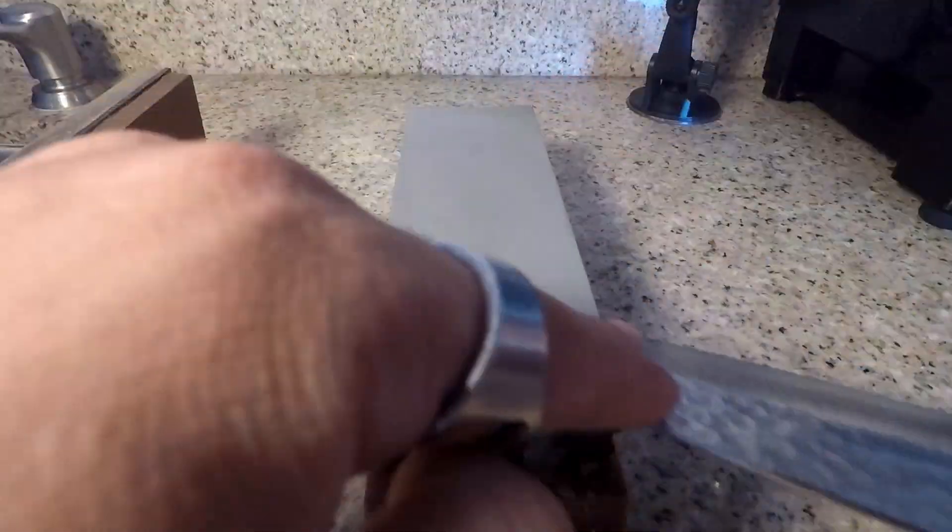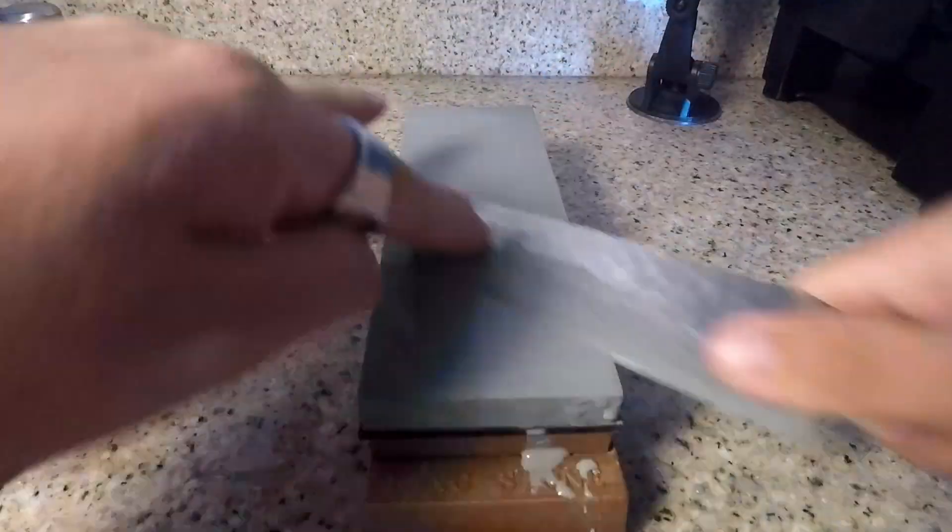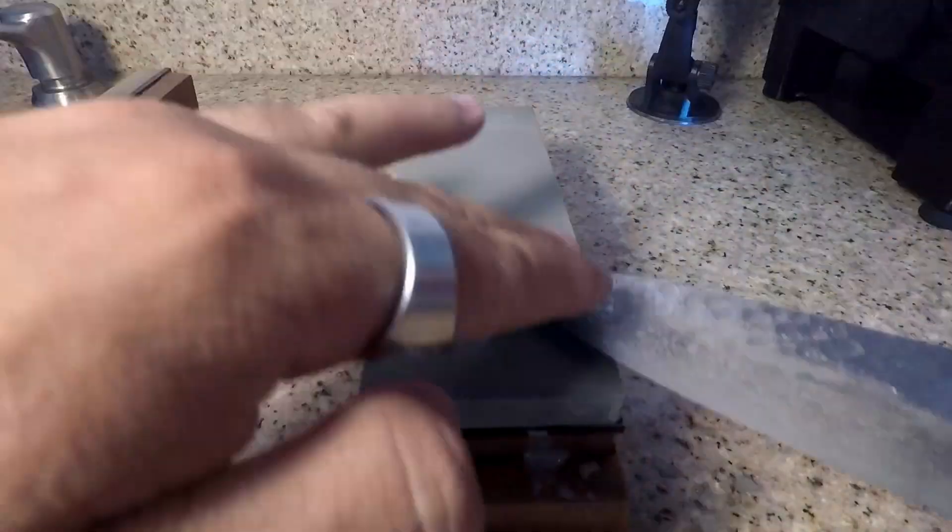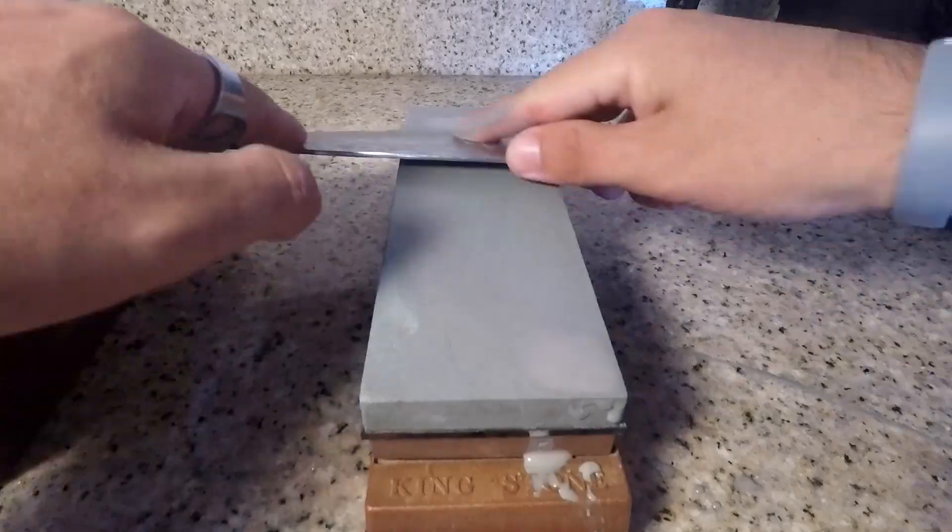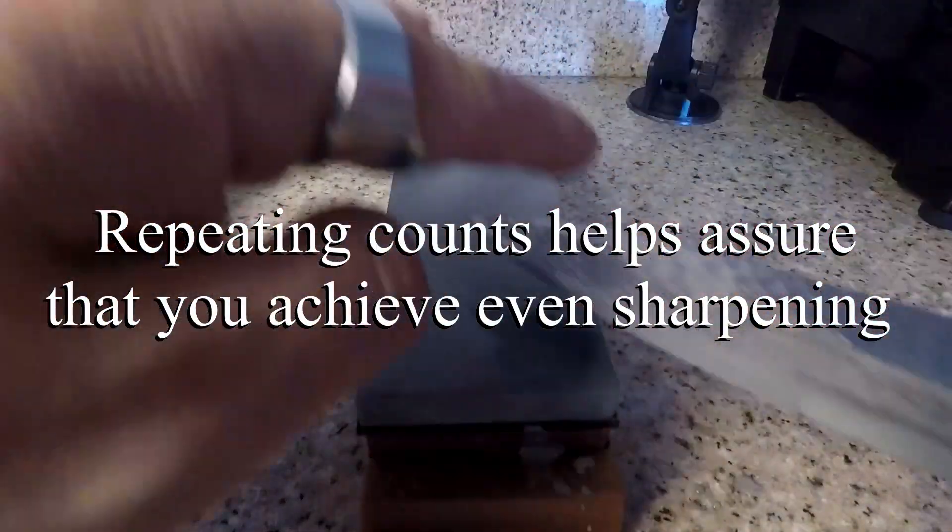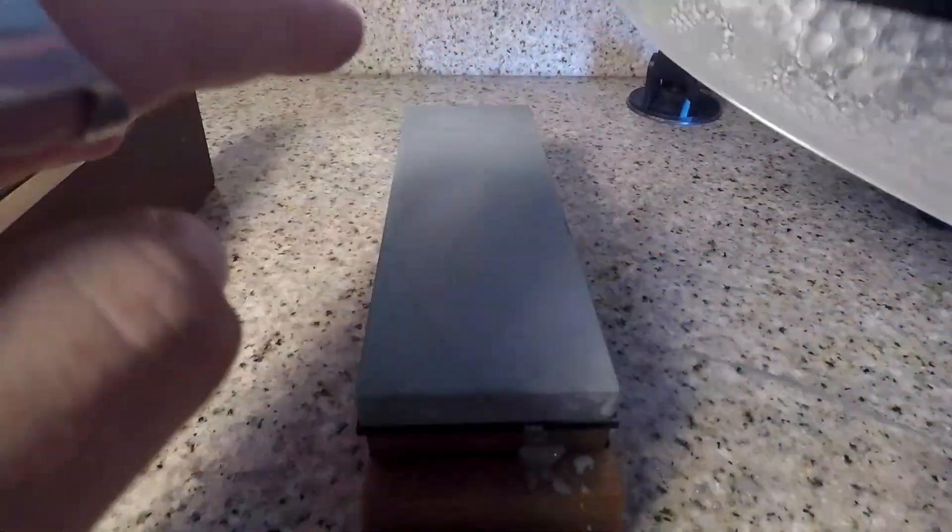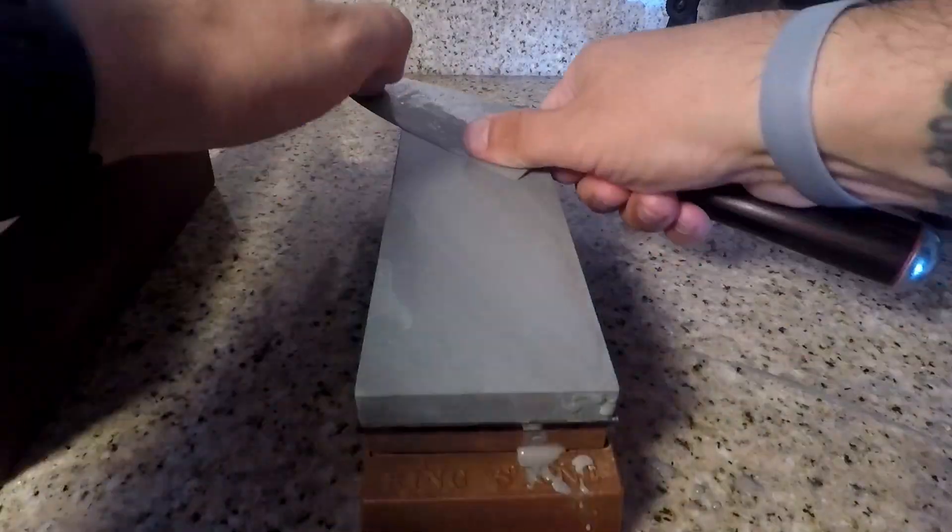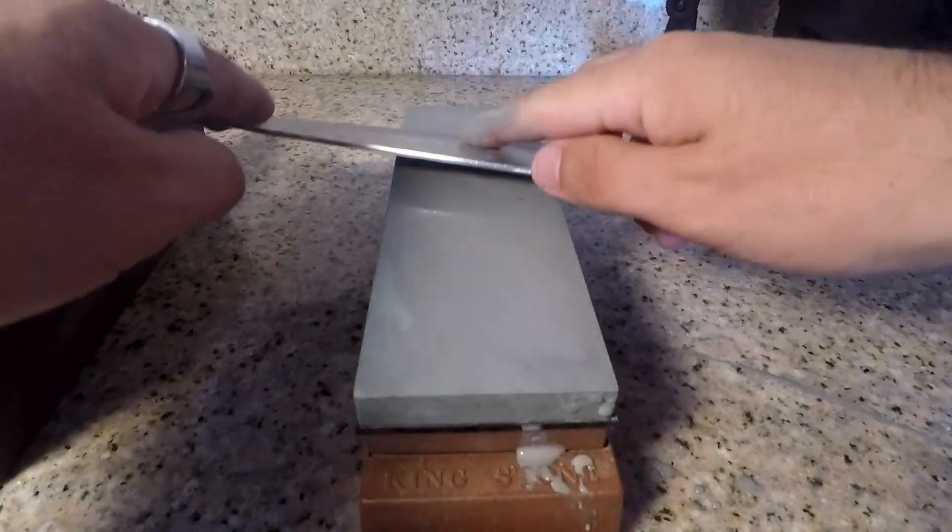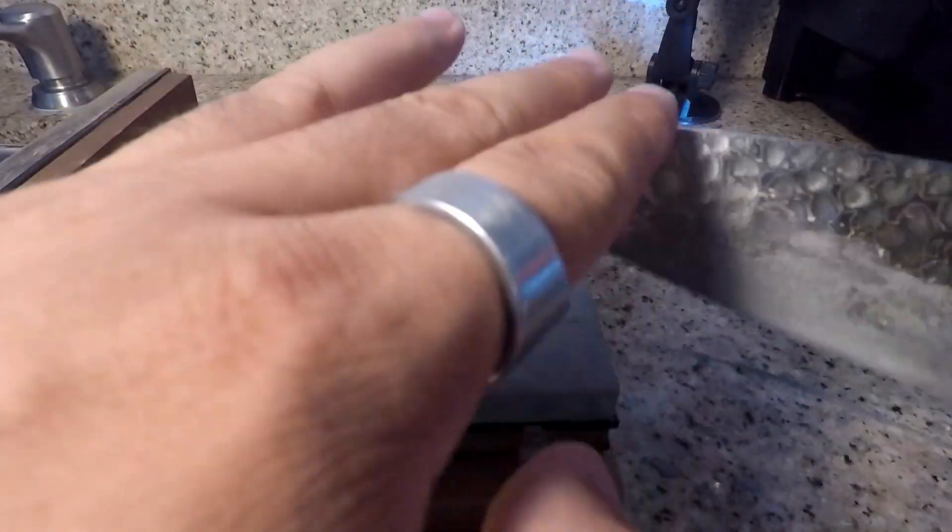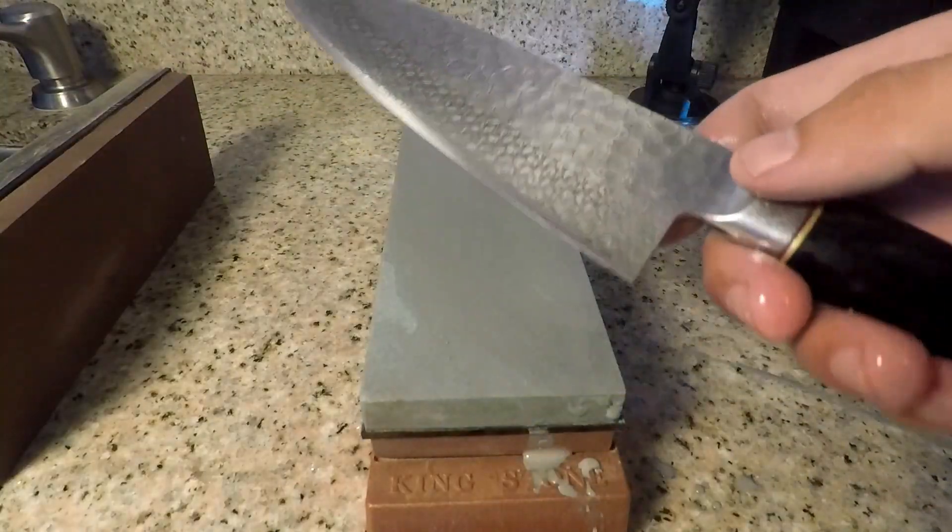So now that we've worked our way down from 15 all the way to three, a lot of times I'll repeat each set when I get to the lower numbers. That way it just makes sure that everything's nice and consistent. So for instance right now I'm gonna do the set of three twice and then I'm gonna do two a few times and then I'm gonna clean the knife off real fast.